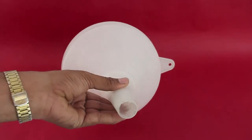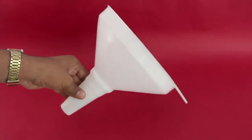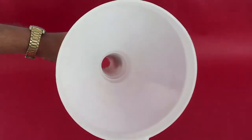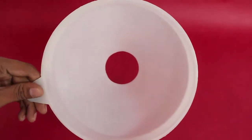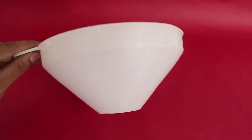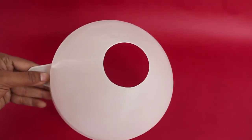Cut the tube part of the funnel to get a bowl with a hole in the middle. If you cut the stem of the funnel, this is what the cut funnel will look like.